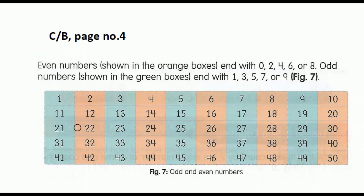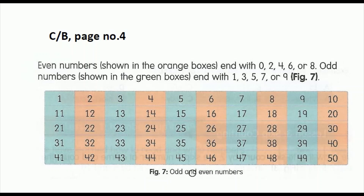Now we will move to the green box. In the green box, first it is ending with the number 1, and number 1 is an odd number, so the numbers in the green box are odd numbers. Next, all the numbers are ending with 3, so all the numbers here are odd numbers. Here the numbers are ending with 5, so all the numbers here are odd numbers. Here the numbers are ending with 7, so all odd numbers. Here the numbers are ending with 9, so all the numbers here are odd numbers.